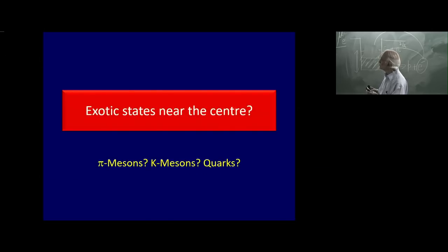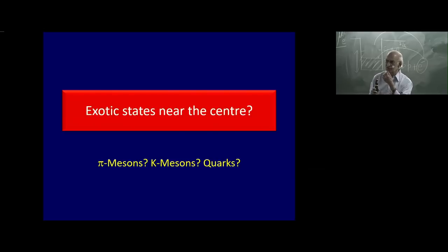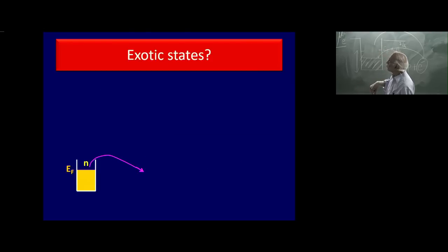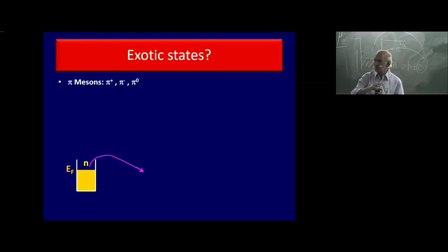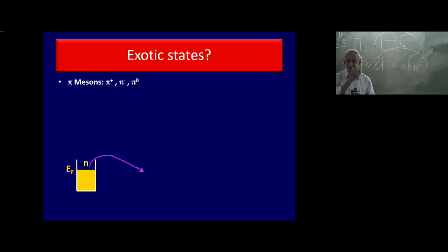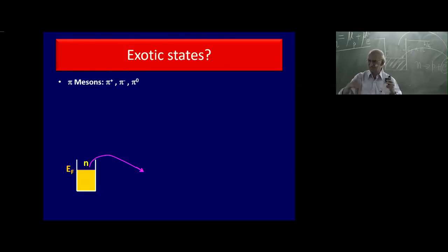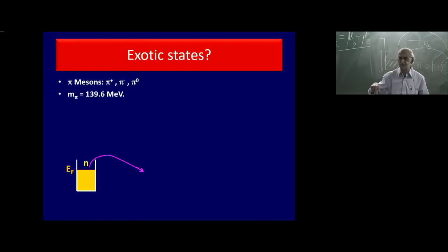Now let us turn to the very center of the neutron star — the open question from when we discussed the interior. So far we have talked only of electrons, protons, and neutrons. But we know there are other elementary particles. There are pi mesons, which come in three varieties: π⁺, π⁰, and π⁻. The mass of the pi meson is roughly 140 million electron volts — much heavier than the electron. Importantly, pi mesons obey Bose–Einstein statistics, not Fermi–Dirac statistics.